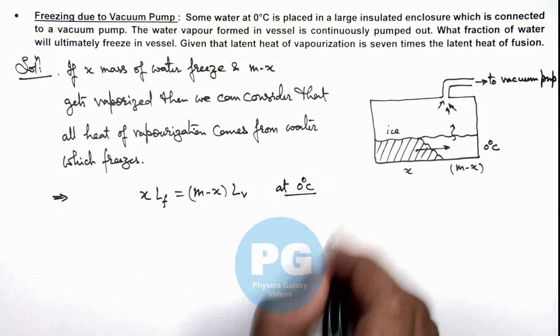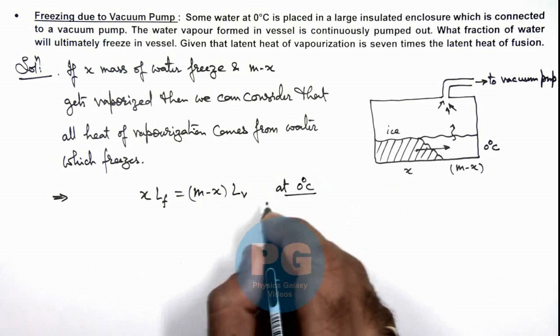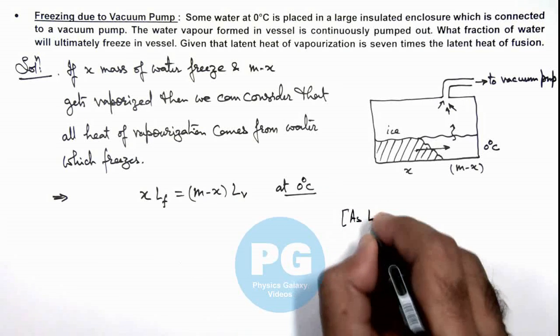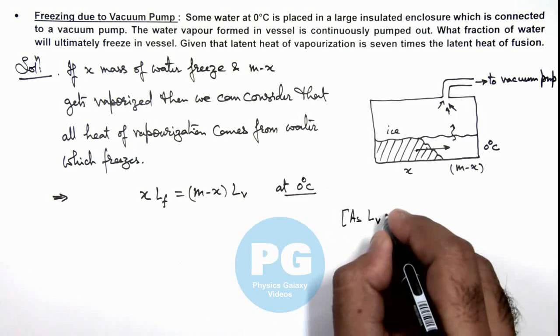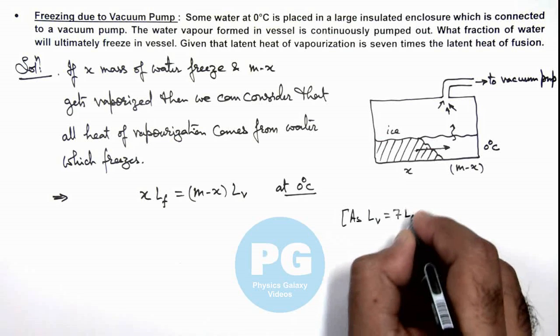So no variation in temperature will take place. And we are given that latent heat of vaporization will consider as seven times the latent heat of fusion.